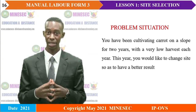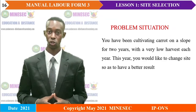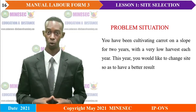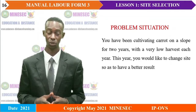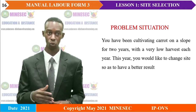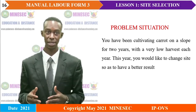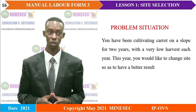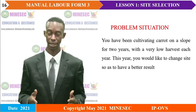Now let's look at the problem situation. By the end of this lesson, you should be able to deduce the problem from this short text and suggest solutions. Problem situation: you have been cultivating carrots on a slope for two years, with a very low harvest each year. This year, you would like to change site so as to have a better result. Deduce the problem and suggest possible solutions.